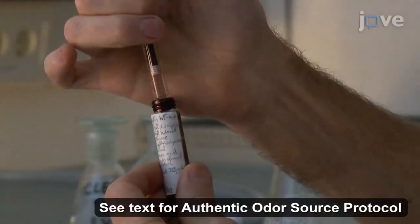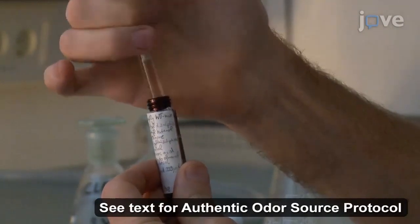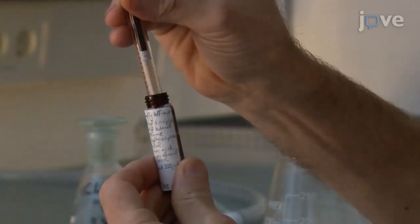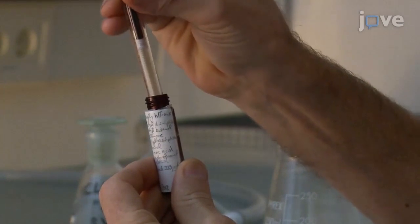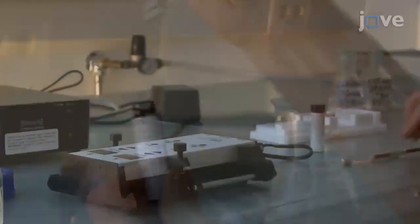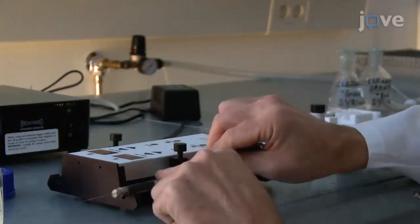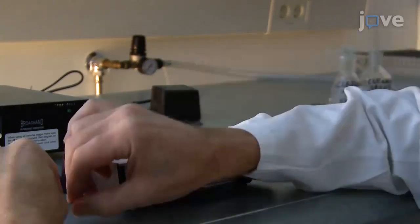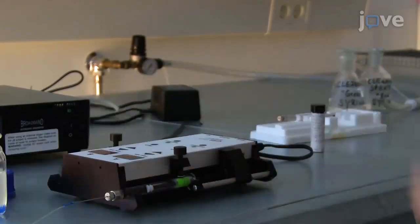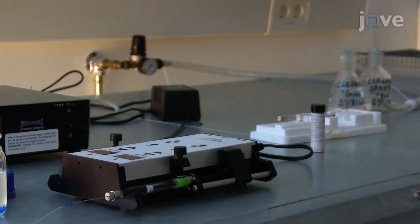Here, the sprayer protocol is demonstrated to prepare odour sources. Fill the one milliliter gas tight syringe with a synthetic odour mix and insert the syringe into the syringe pump. Connect the syringe tip to the fluorinated ethylene propylene tubing using tubing adapters.